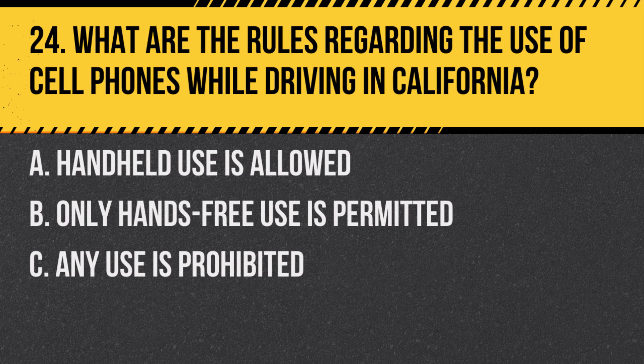Question 24: What are the rules regarding the use of cell phones while driving in California? A. Handheld use is allowed. B. Only hands-free use is permitted. C. Any use is prohibited. Answer: B. Only hands-free use is permitted. In California, drivers are allowed to use cell phones only with hands-free devices.